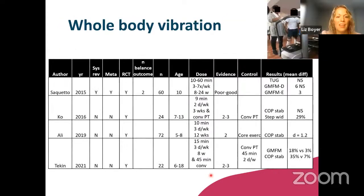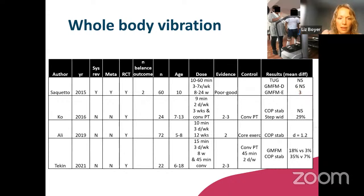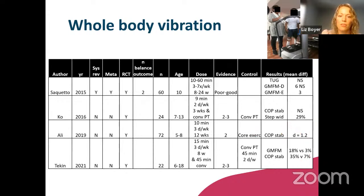Whole body vibration is gaining traction for many different outcomes including balance. A 2015 systematic review included two studies measuring balance and did not report group differences for timed up and go, though there was a three-point difference in GMFM dimension E. For the remaining three RCTs since then, we seem to be observing more benefit — improvements ranging from approximately 18% to 35%, with a large effect size for instance versus core stability exercises.